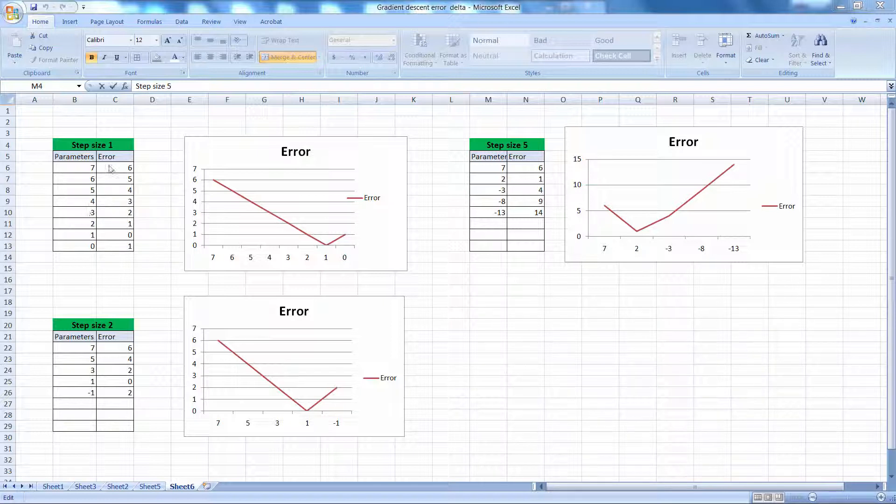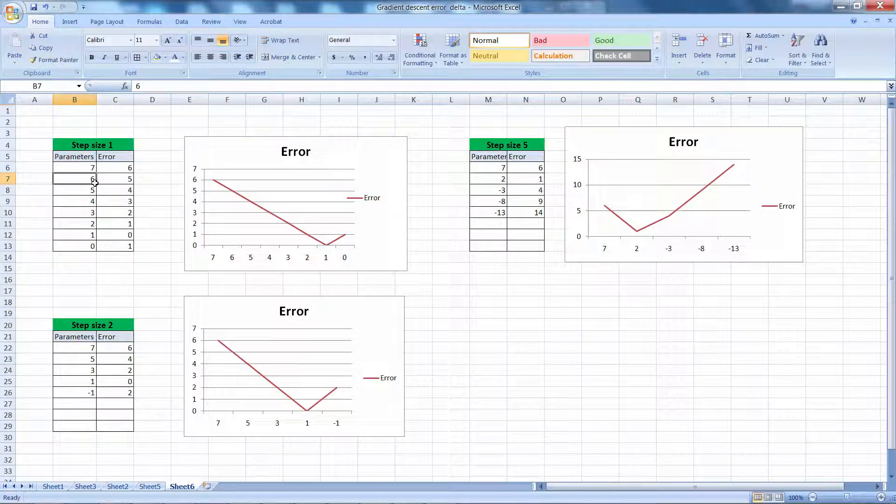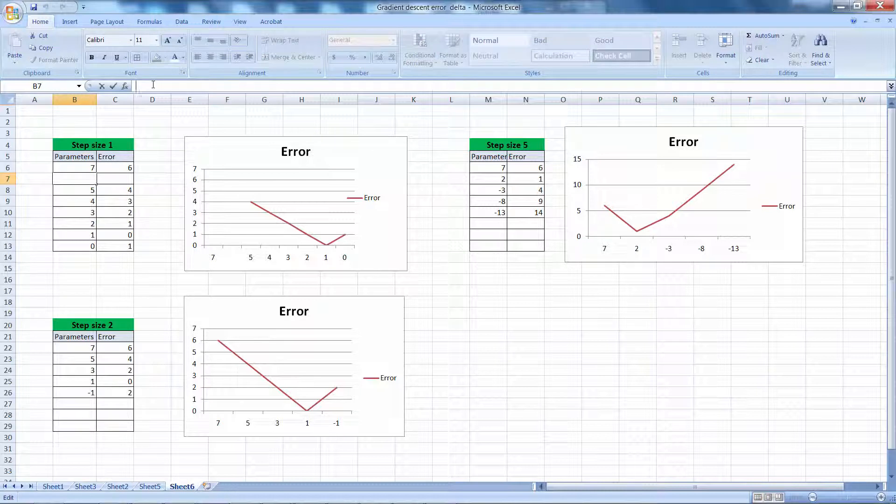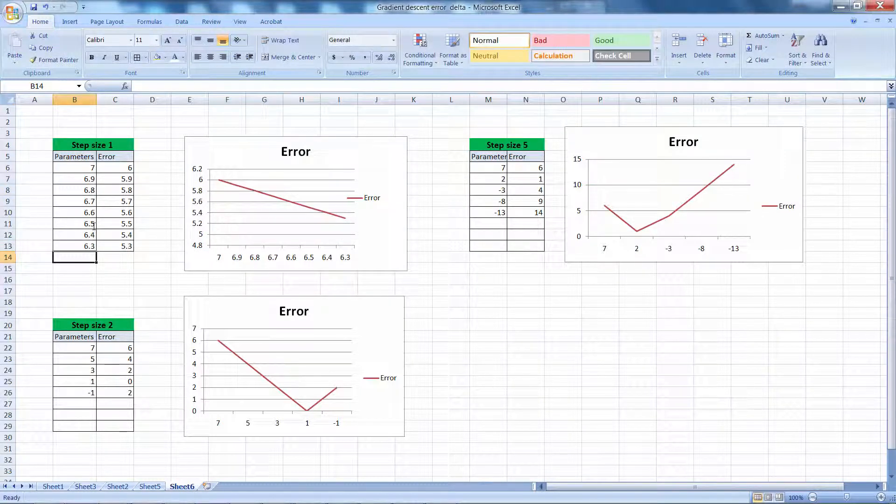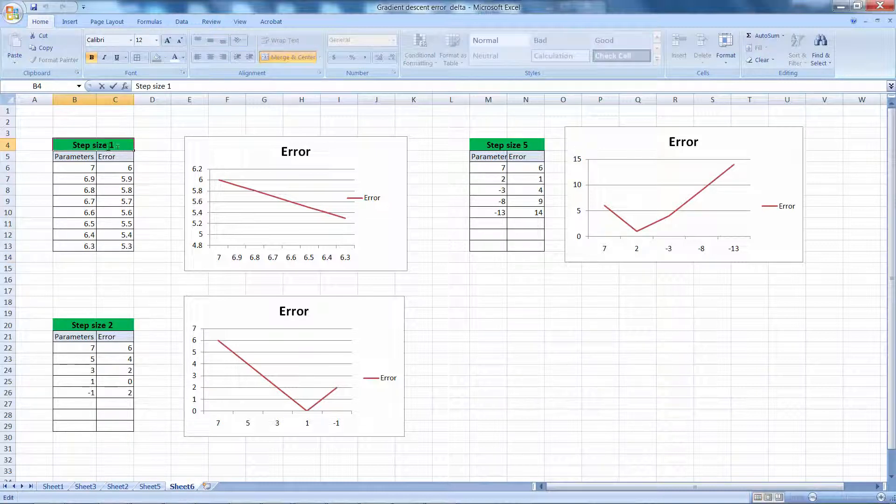Too small a step—for example, if the step size was 0.1—it would change like this: 6.9, then 6.8, and so on. As you can see, there will be a gradual change in the error. Obviously you will reach the bottom, but it will take some time. So those are some challenges with the step size.